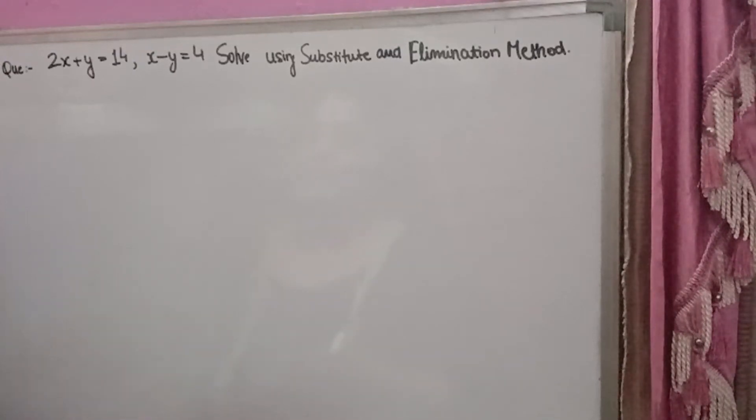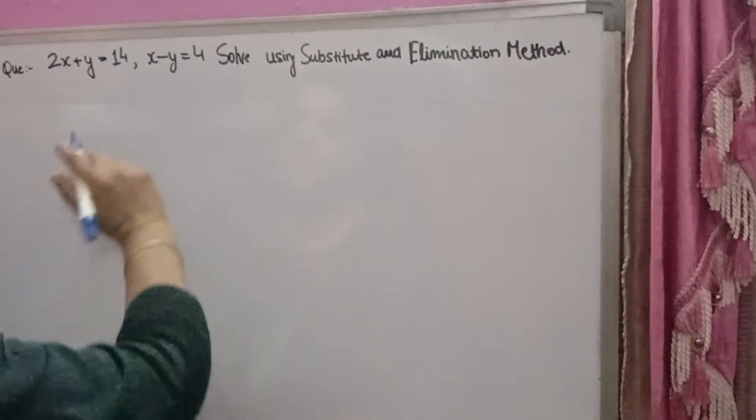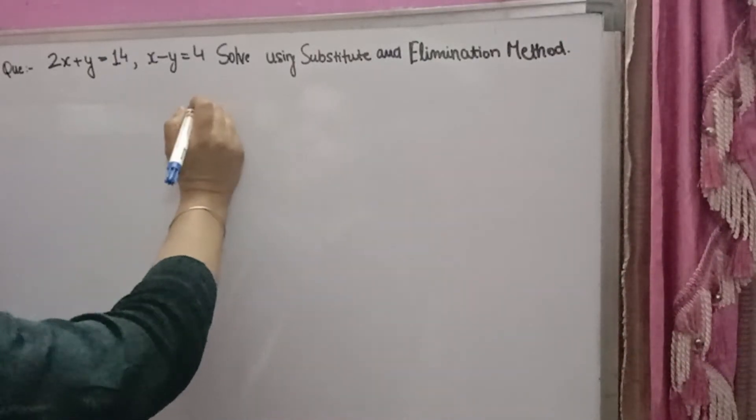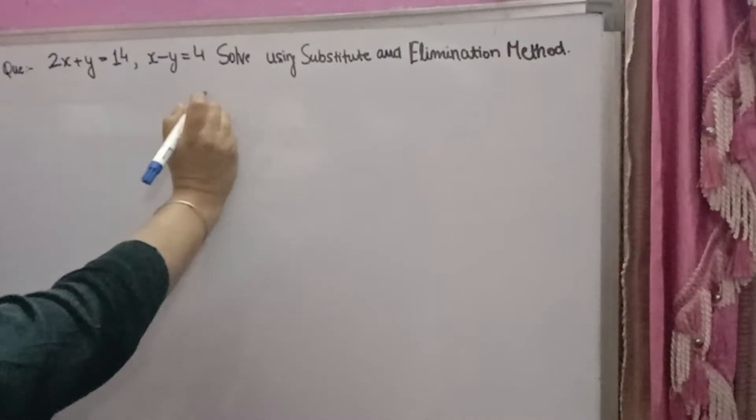Dear students, welcome back to your favorite channel, Health Helpers. The important question: 2x plus y equals 14, x minus y equals 4. You have to solve using substitution and elimination method.